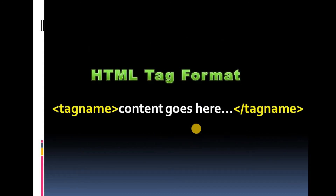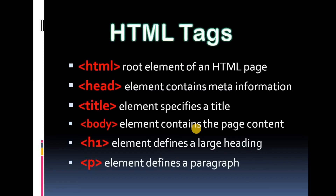An HTML tag has a starting tag and an ending tag. The ending tag has a forward slash. Tags include the title tag, body tag, and other content tags within HTML.